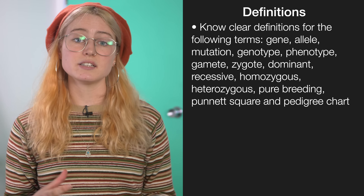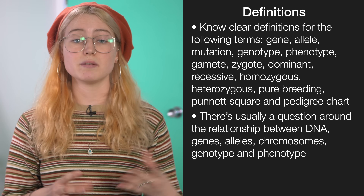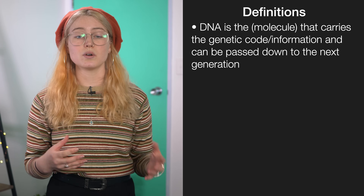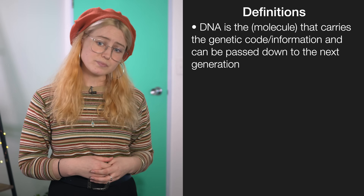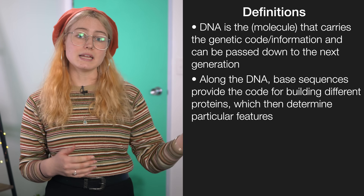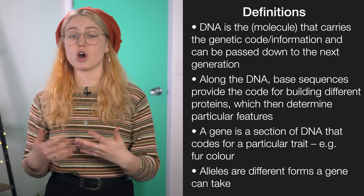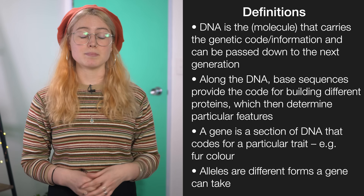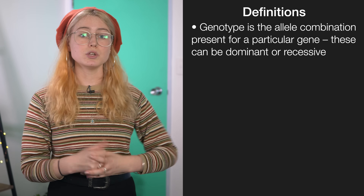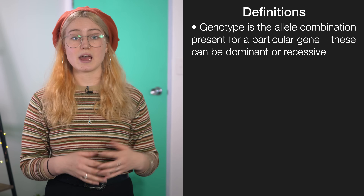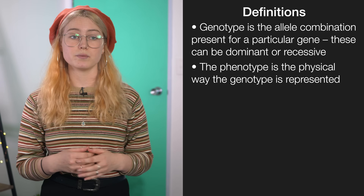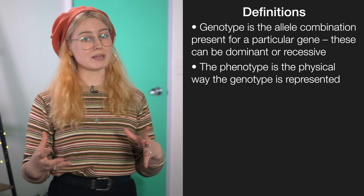A really common question asks you to explain the difference between DNA, genes, alleles, chromosomes, and the resulting genotypes and phenotypes. DNA is a molecule that holds all of our genetic information like a blueprint — it stays in the nucleus of the cell until it undergoes mitosis or meiosis. A length of DNA is called a gene, and an allele is an alternate version of a gene — for example, the gene might be eye color, and the alleles might be blue eyes versus brown eyes. Your genotype is the pair of alleles you have for a gene, and your phenotype is the physical expression of that gene. To remember it, note that phenotype and physical expression both start with 'ph'.